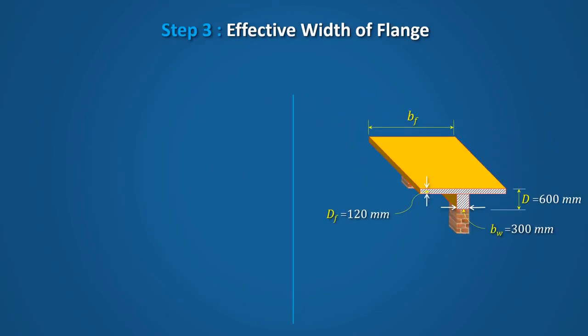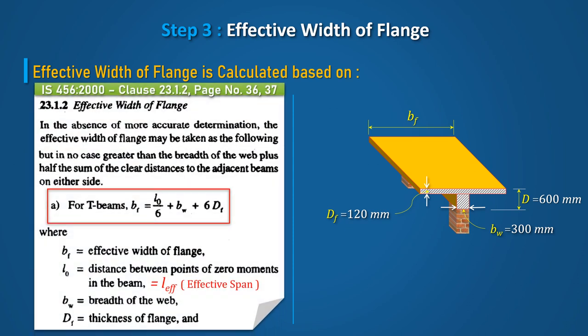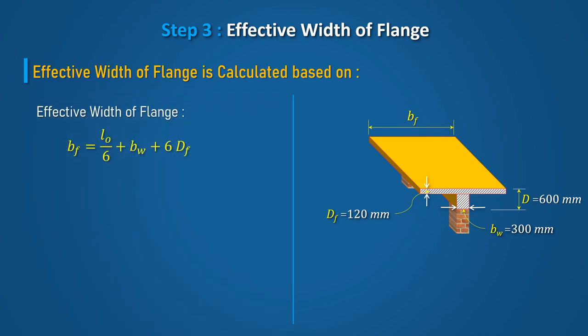In Step 3, compute the effective width of the flange. In the absence of more accurate computation, the effective width of the flange may be calculated by referring to equation A in clause 23.1.2 of IS456-2000. Since the beam is simply supported, the value of L0, which is the distance between points of zero moment, can be taken as the effective span. After putting the values of L0, BW, and DF, we get the effective width of the flange equal to 2095mm.